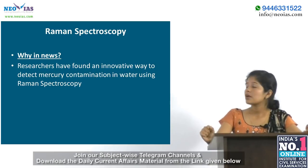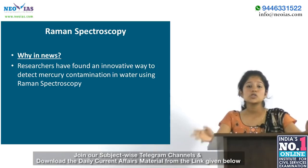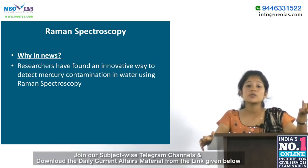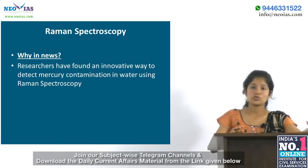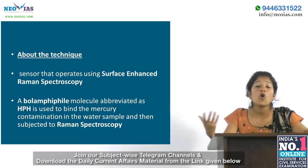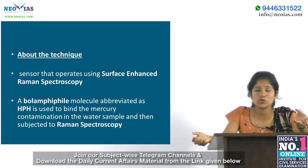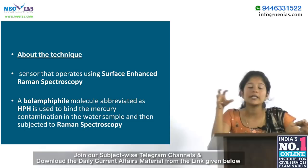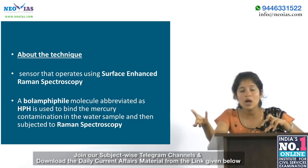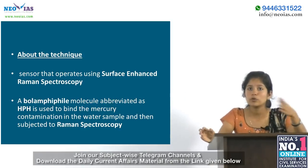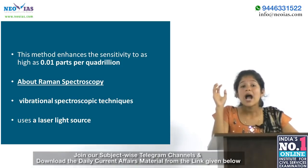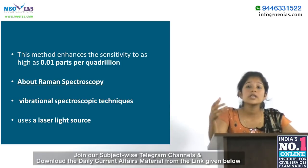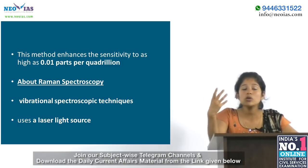Now a topic from science and technology — Raman spectroscopy. Researchers at Jawaharlal Nehru Centre for Advanced Scientific Research found an innovative way to detect mercury contamination in water using Raman spectroscopy. A sensor operating on surface-enhanced Raman spectroscopy was used. A volanthropy molecule abbreviated as HPH was used to bind the mercury contamination in a water sample and then subjected to Raman spectroscopy. This method enhances sensitivity to as high as 0.01 parts per quadrillion, compared to 0.1 parts per billion when a solution of HPH in water is used.